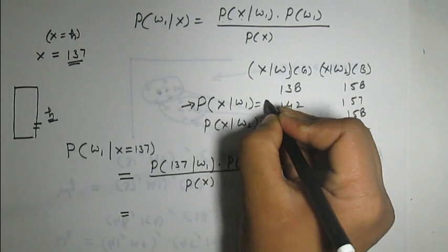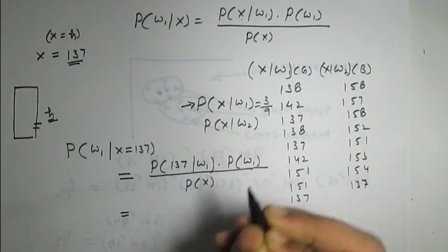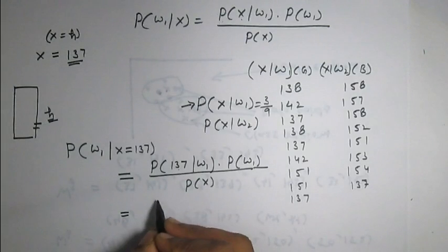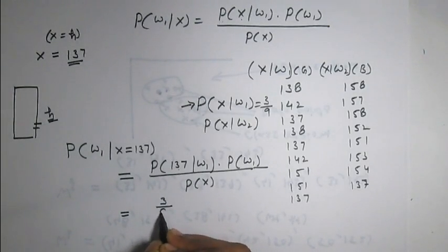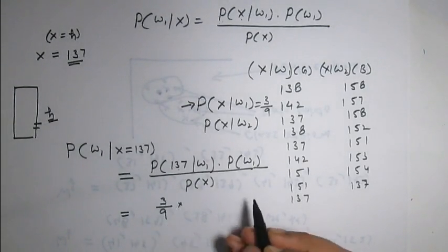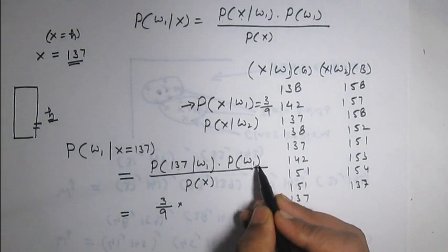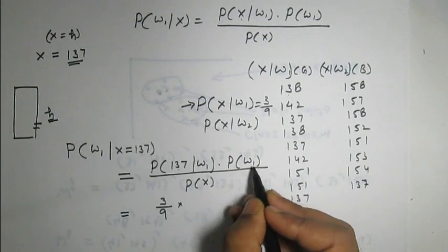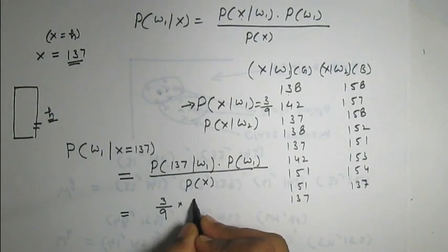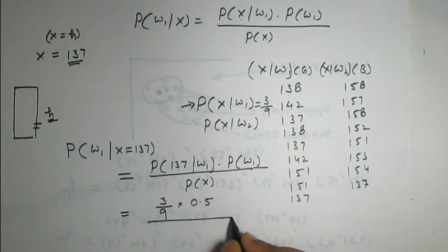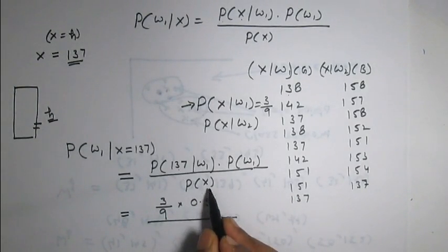So P(X = 137 | omega 1) equals 3 over 9. There are two classes, so the probability of omega 1 is 0.5. The total P(X = 137) is computed across all observations.